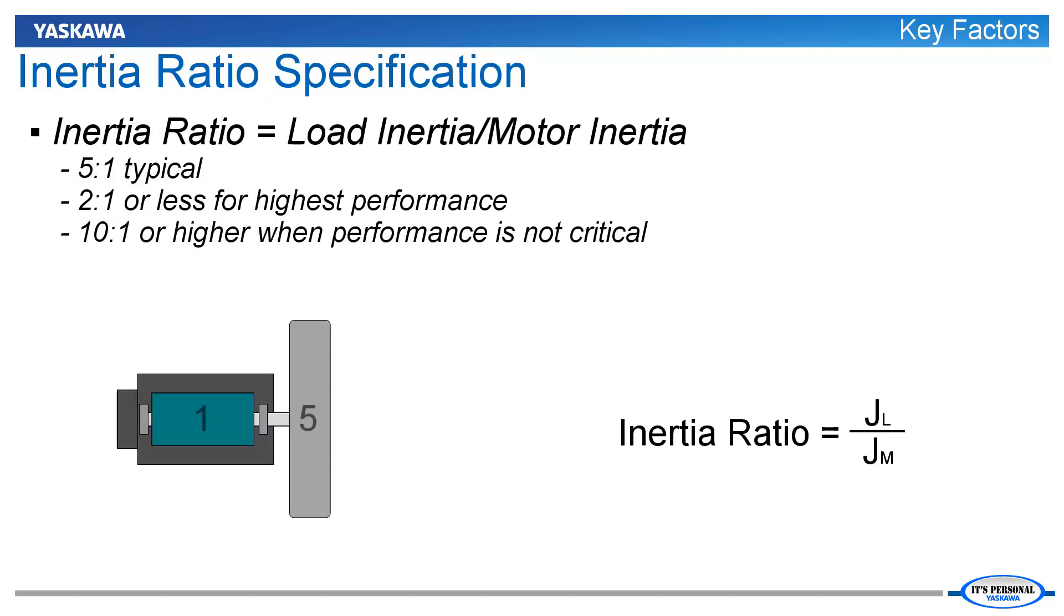Inertia ratios around 5 to 1 are typical for many applications. Performance tends to go up as the inertia ratio is lowered, often down to 2 to 1, 1 to 1, or lower.